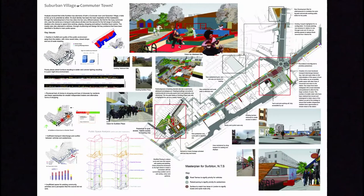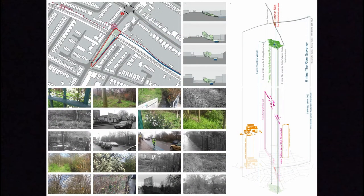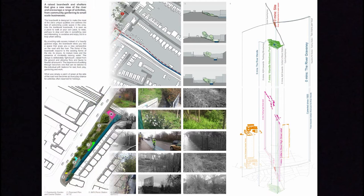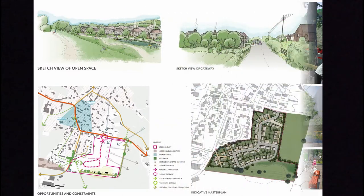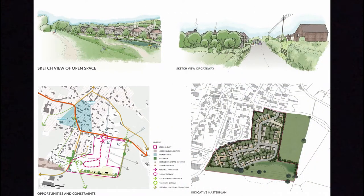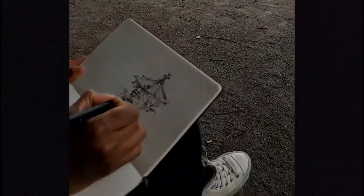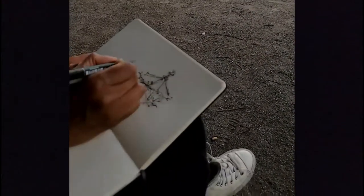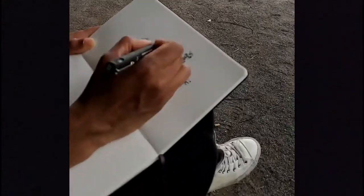As an urban designer, something I've been trained to do is really understand how a place is put together before I design anything new. This is important for several reasons, but most of all it gives you an appreciation of the existing qualities of a place, as well as those you want to highlight or improve through design. The techniques and skills used by urban designers aren't just about discovering new places — they can be just as useful when rediscovering old familiar places.